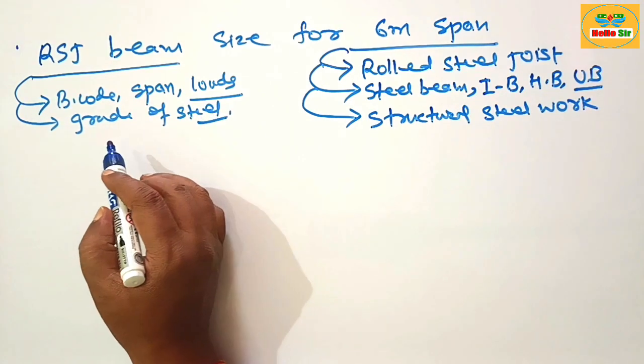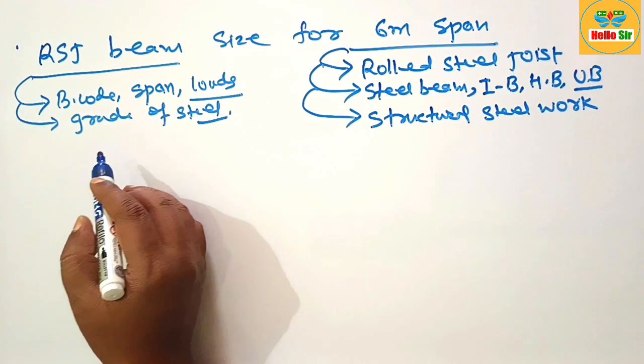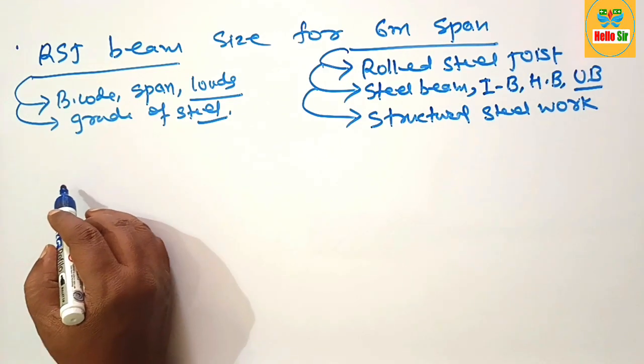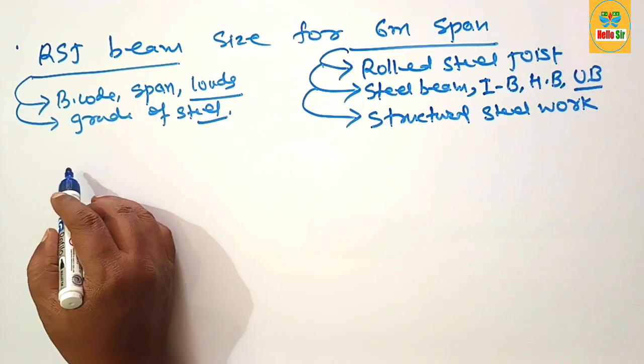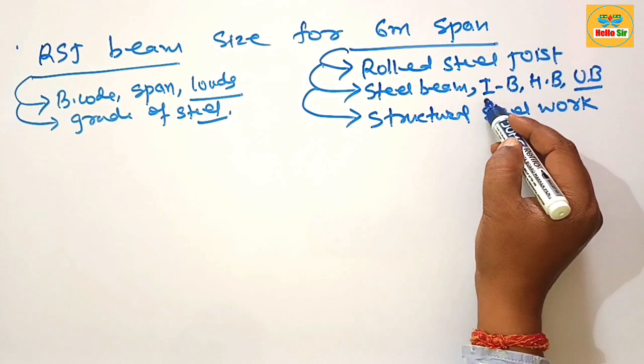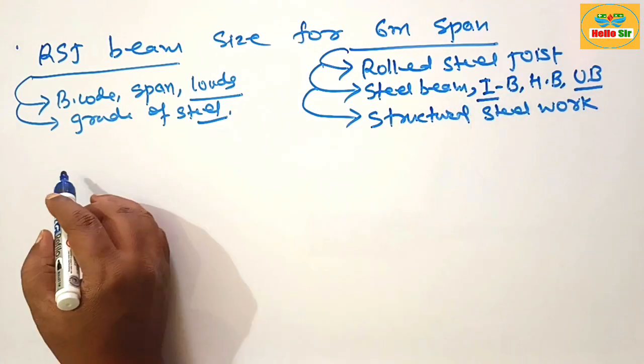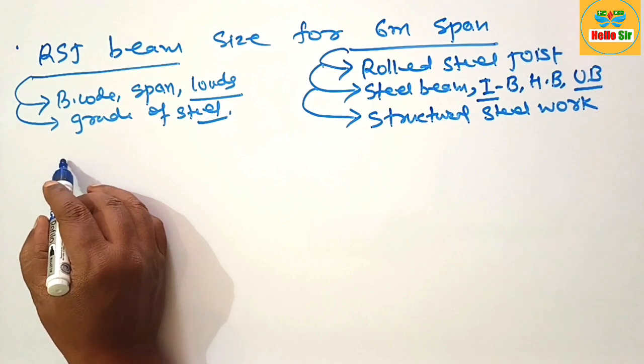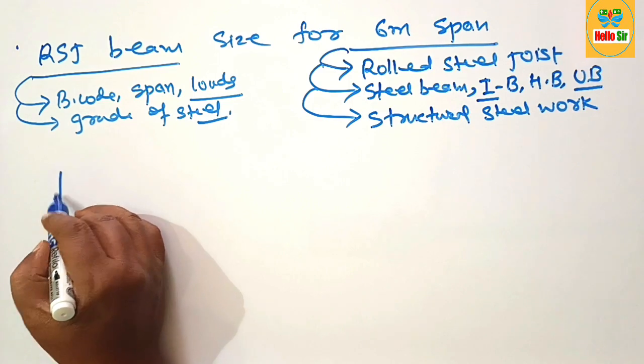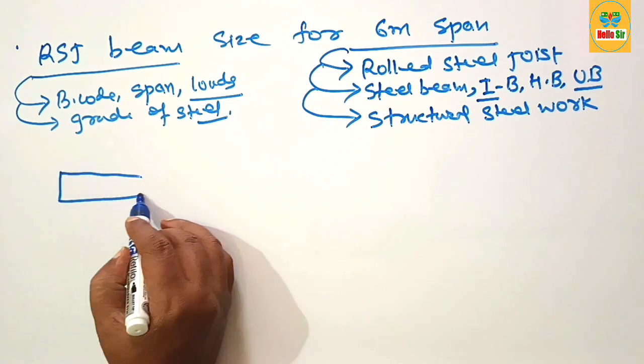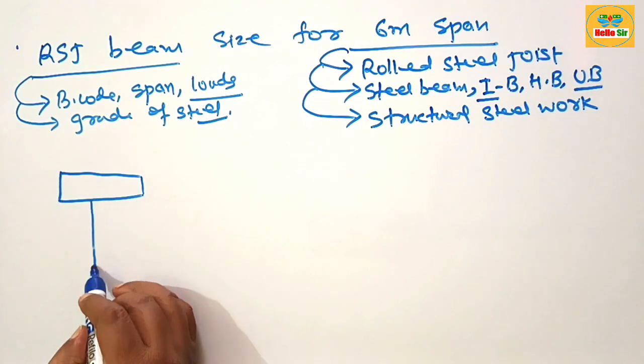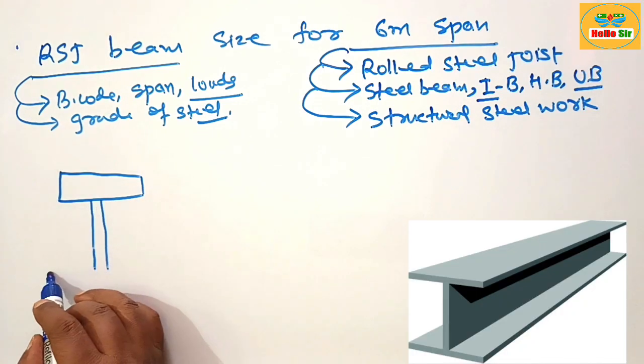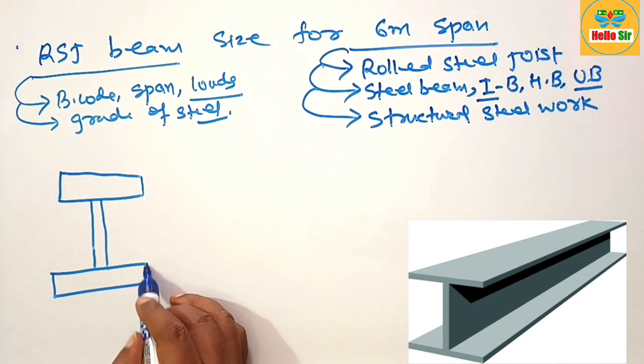We decide the correct sizing of RSJ beam. First we understand about the dimension of RSJ beam. Here you can see an I beam. Here we make a rough diagram to understand the RSJ beam.